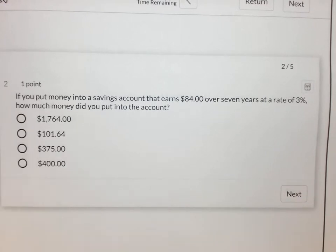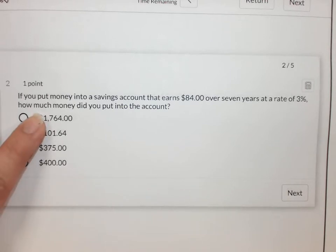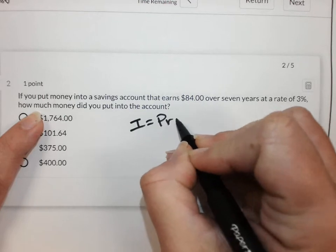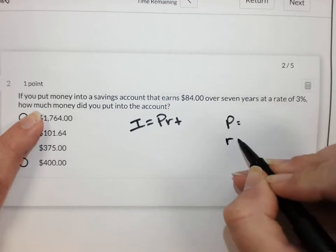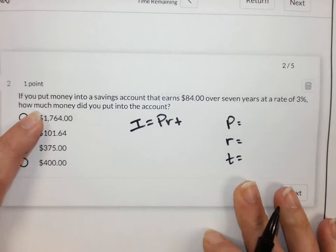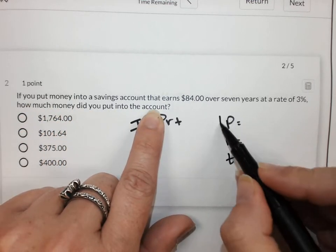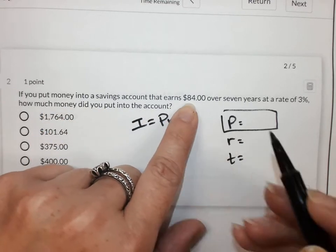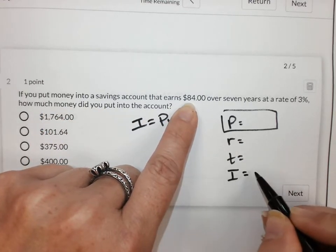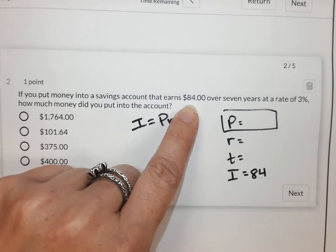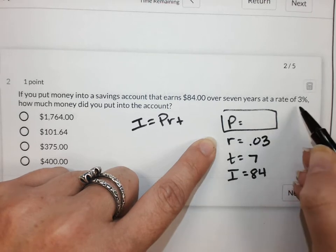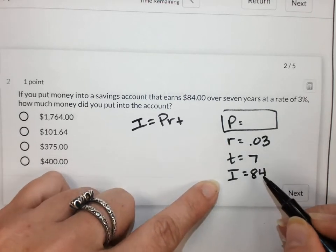If you put money into a savings account that earned $84 over 7 years at a rate of 3%, how much money did you put into the account? Alright, I equals PRT. So they're actually asking you for the P. How much did you put into this account? And it's telling you it earns $84 in interest, a 7 year period, at 3% of a rate. So we're going to plug these values in.